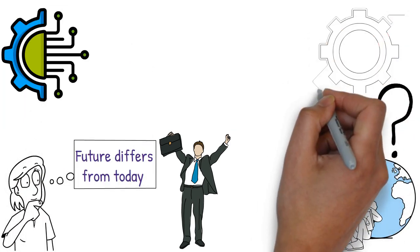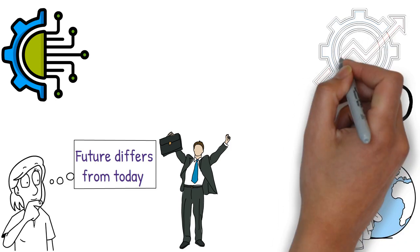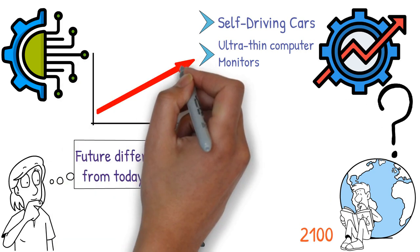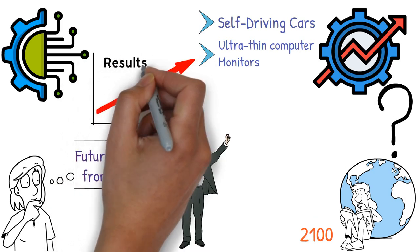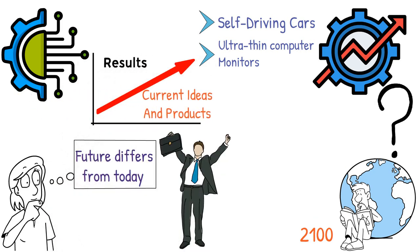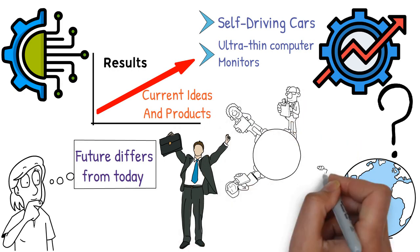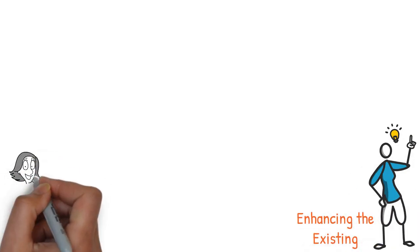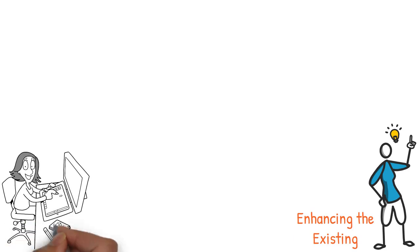Considering 2100, perhaps you picture advanced planes, sleek self-driving cars, or ultra-thin computer monitors. This reflects horizontal progress, which builds upon current ideas and products. Globalization spreads these innovations further. Yet, true innovation isn't just about enhancing the existing. It's about vertical progress, creating entirely new technologies.